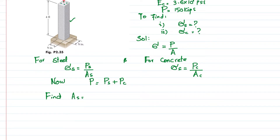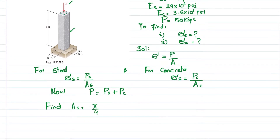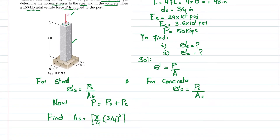The area of a steel bar is (π/4) × d², where the diameter is 3/4 inch. Since there are 4 steel bars, we multiply by 4 to get the total area of steel bars. When you calculate it, the total steel area A_s comes out to be 1.767 in².